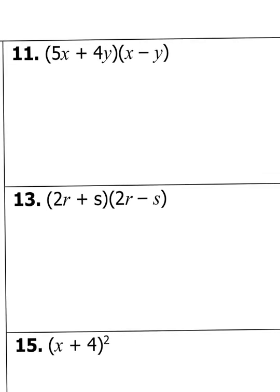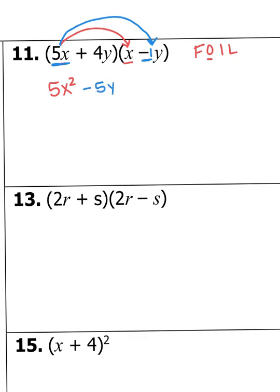Let me do number 11 with you: 5X plus 4Y times X minus Y. Using FOIL, the first two terms: 5X times X makes 5X squared. Then Outside: 5X times negative Y — so 5 times negative 1 makes negative 5, and then I have X times Y, which I can't simplify — so I write negative 5XY.